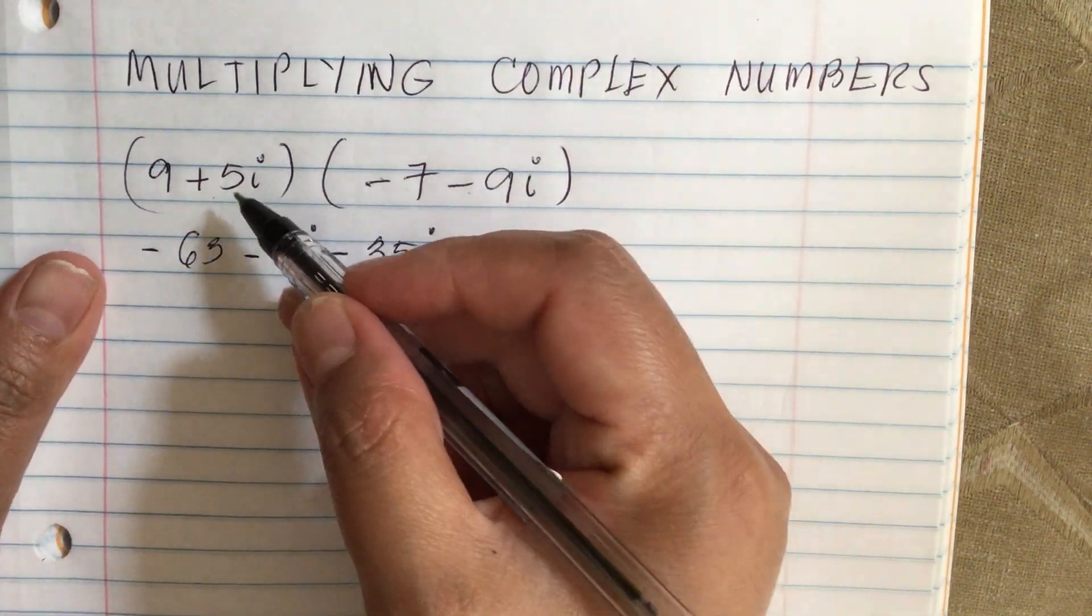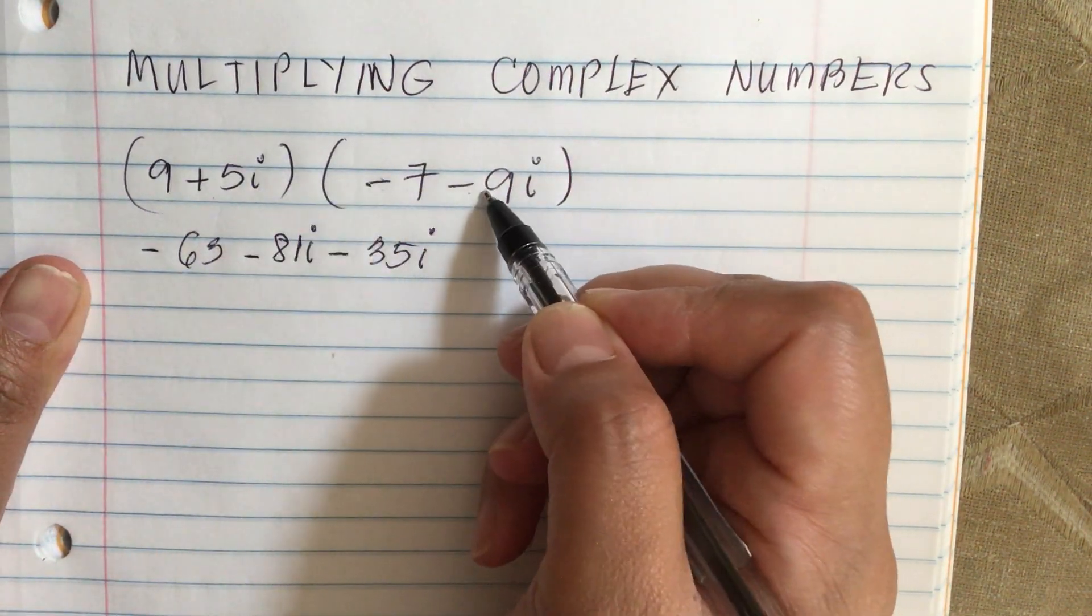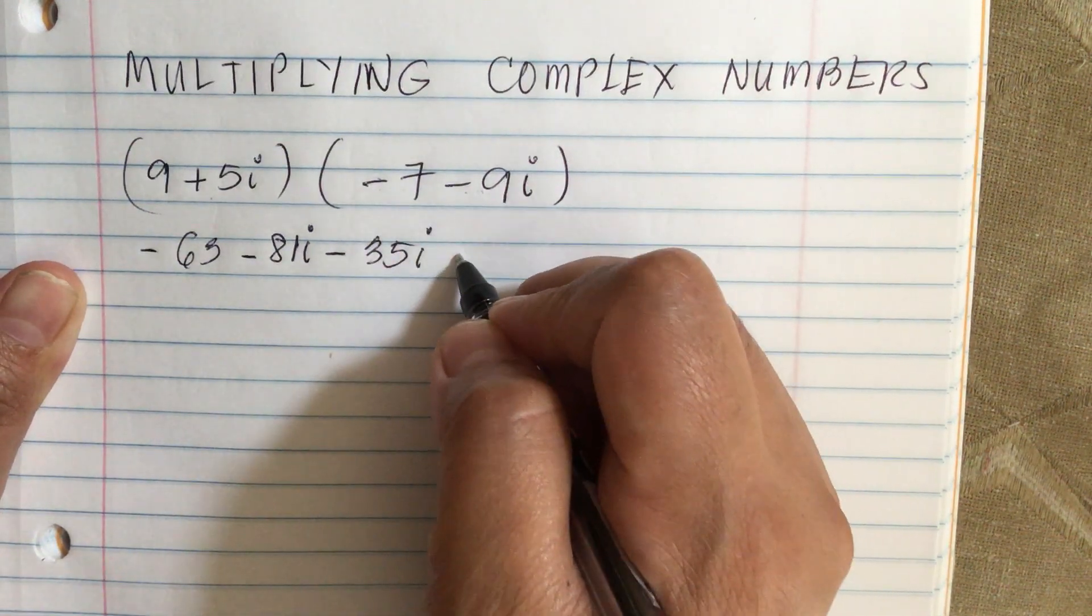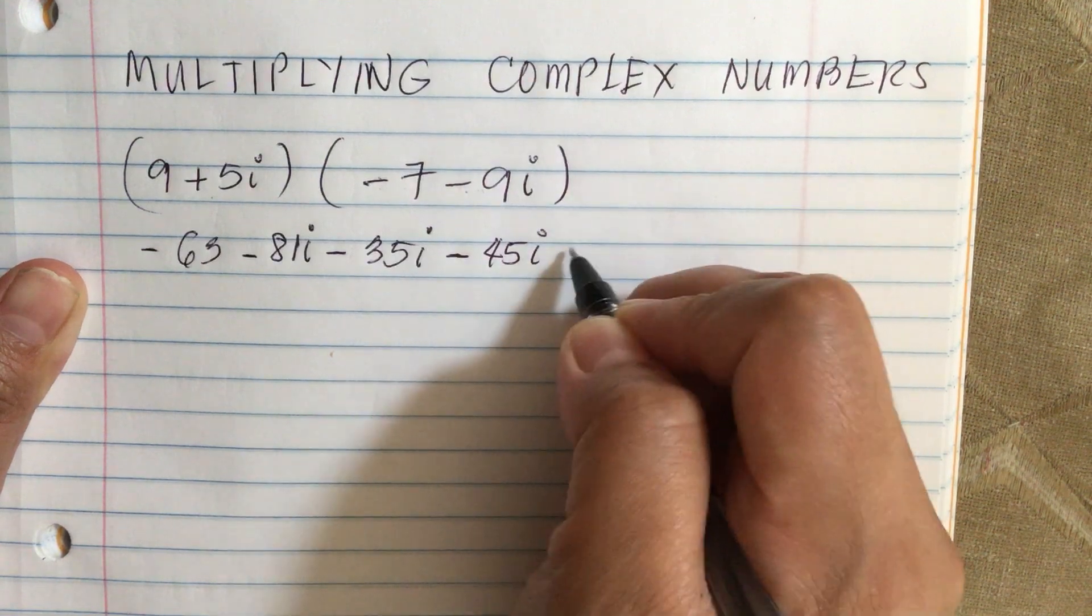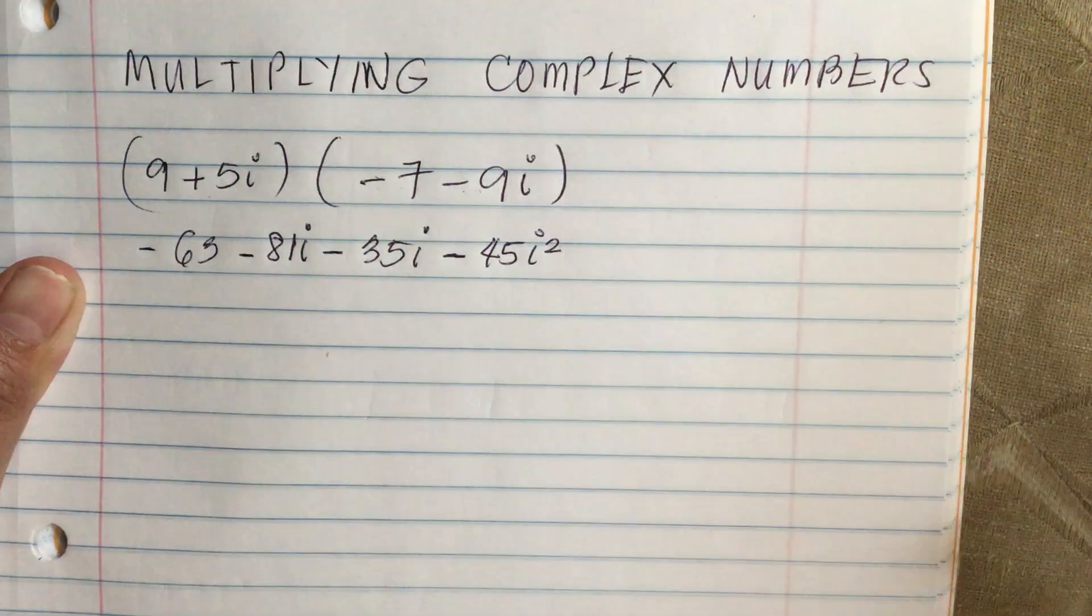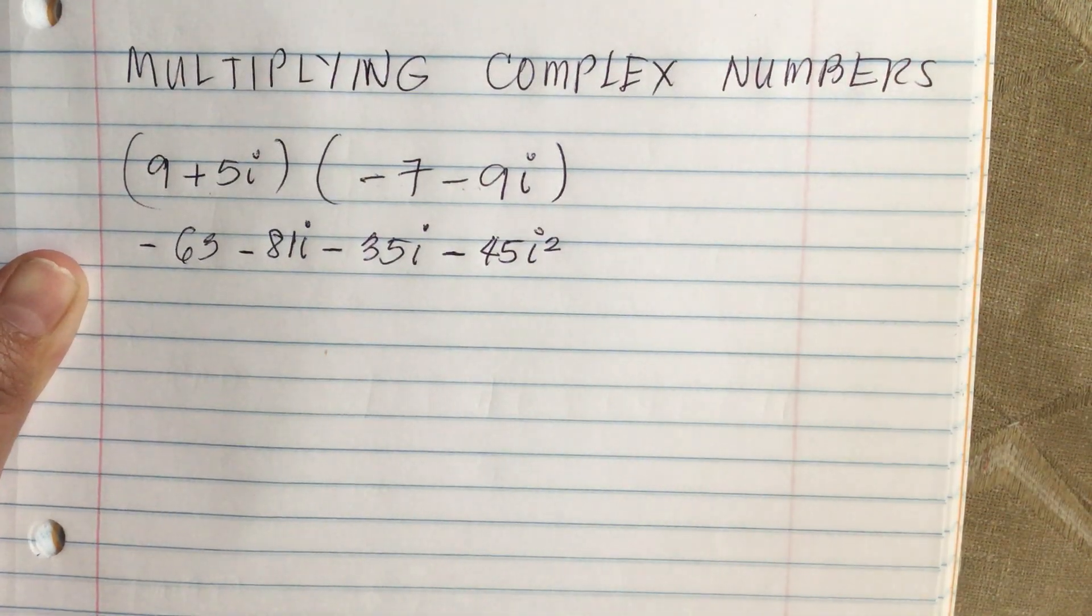And then the last terms: we have 5i times minus 9i, which is equal to minus 45i squared. So we combine like terms.